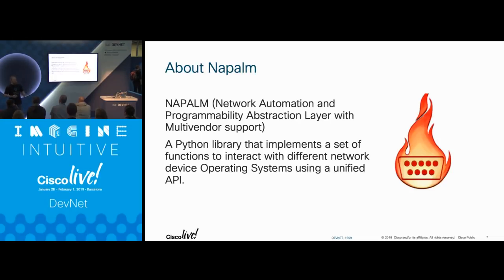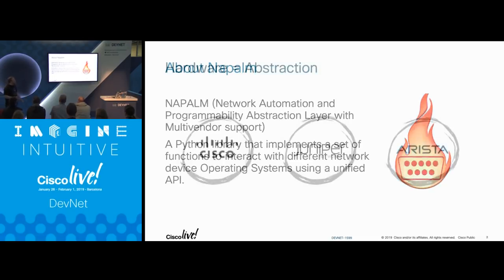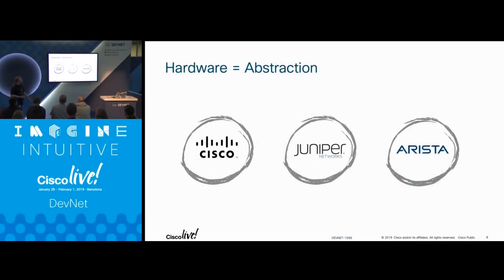That means you can use your latest and greatest devices such as Nexus with NX-API, XE and XR, and also get your older devices, and run the same automation across all of them with a unified API.